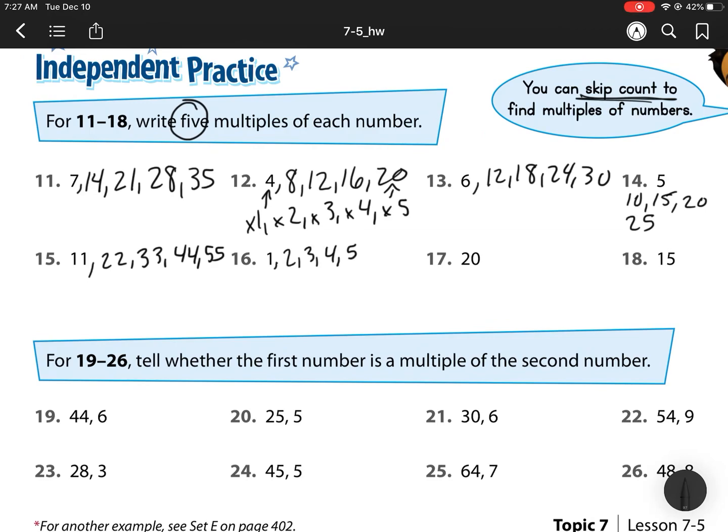20, 40, 60, 80, 100. And 15, we have 15, 30. 30 plus 15 is 45. 45 plus 15 is 60. 60 plus 15 is 75.